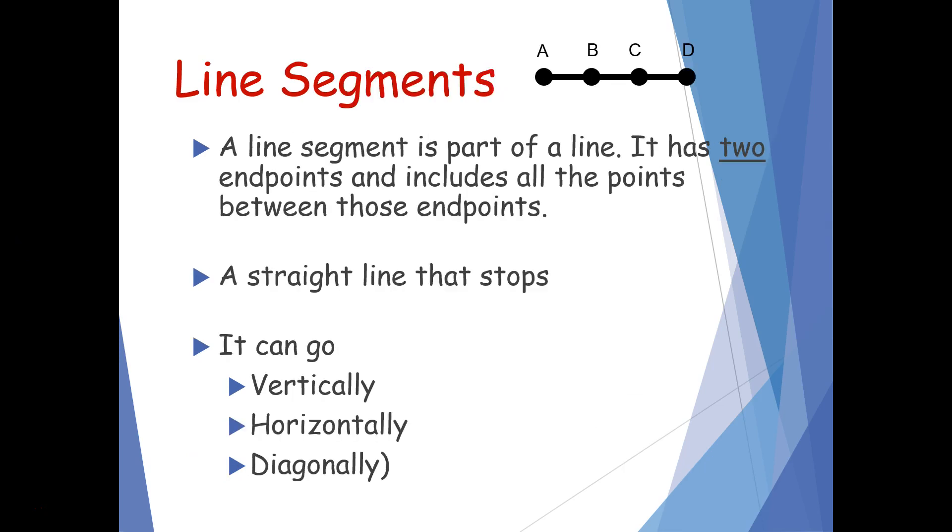You also learned about a line segment. A line segment is part of a line and it has two endpoints and includes all the points in between those endpoints. A line segment is a line that stops. It can go vertically, horizontally, and diagonally. You know that it's a line segment because it has endpoints on the ends of it as opposed to arrows to show that it's a specific place. It has a start and a stop.